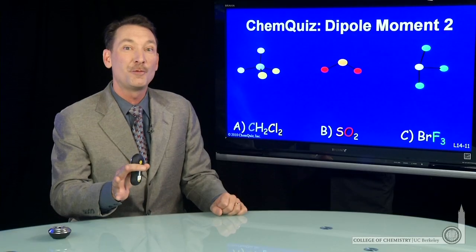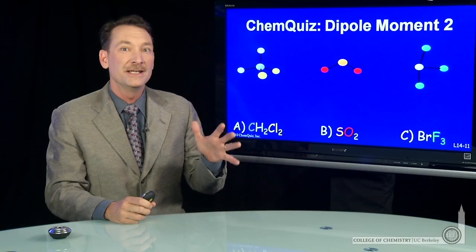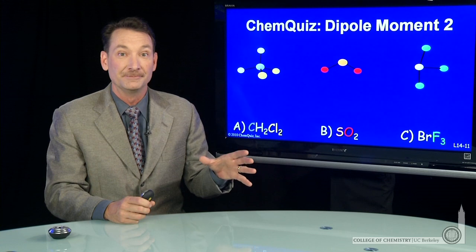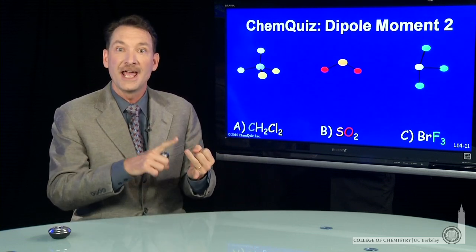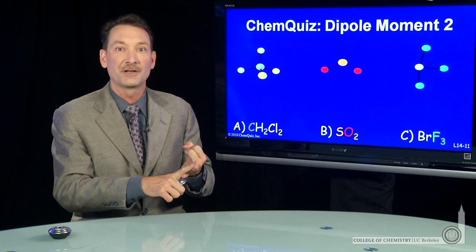We're determining dipole moments for molecules. To do that, we need the molecular geometry. To get the molecular geometry, you have to go through the process of writing a good Lewis structure and getting the steric number on the central atom.